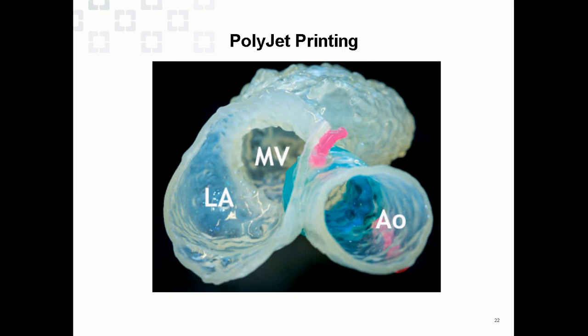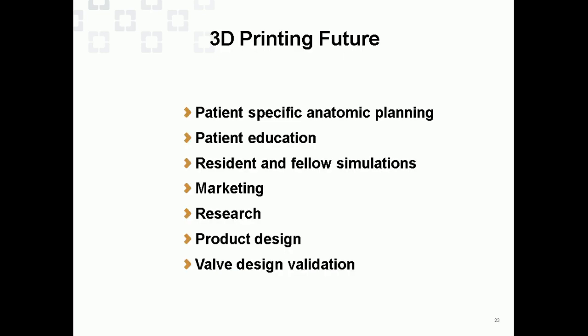The technology is still evolving, and the ideal properties of the plastic material and structure are not yet fully developed. But combining new valve techniques with 3D printing will assist in many areas: patient-specific anatomic planning, patient education — showing a patient exactly what procedure will be done and how — resident and fellow simulation for training purposes, marketing to show others what you plan or have done, and research and product design. Rigid materials will be better for planning annuloplasty rings, and soft materials for valve design validation, placing a stented valve into something anatomically correct and tissue-like.